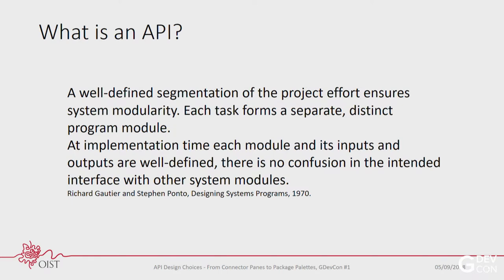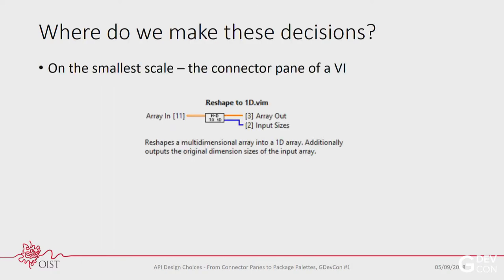This is Richard Gauthier and Steven Ponto from their 1970 book Designing Systems Programs, talking about the benefits of well-defined APIs. They say that if you modularize your program, you have a well-defined segmentation of the project effort, ensuring system modularity. Each task forms a separate distinct program module, and at implementation time each module and its inputs and outputs are well-defined — so other people who write code around your code won't be confused about what's supposed to be going on.